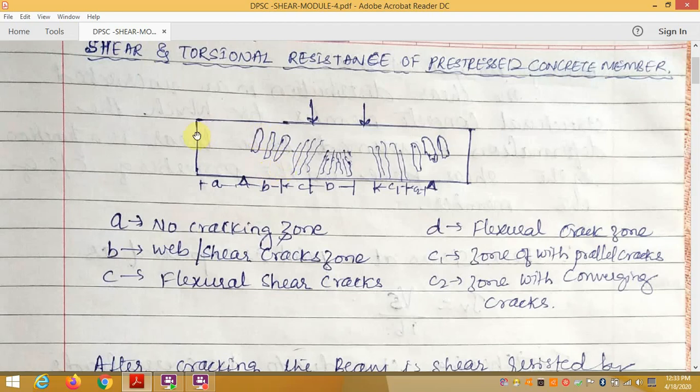Web shear cracks will be at the web on both sides of the beam or member. C is the flexural shear cracks, which is bigger than any other cracks. D at the mid-section has flexural cracks.